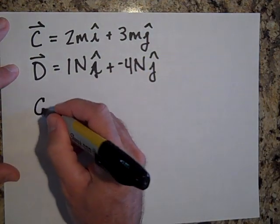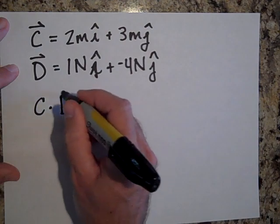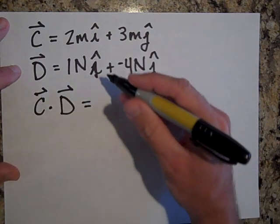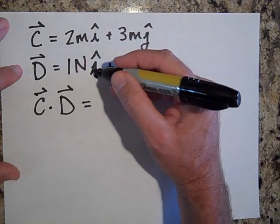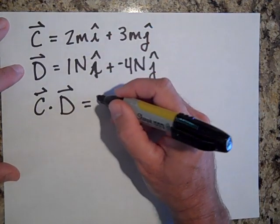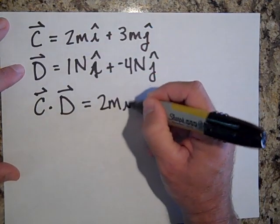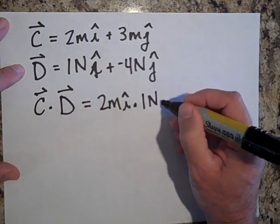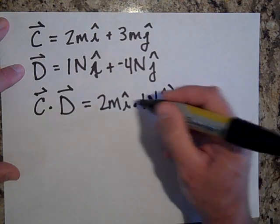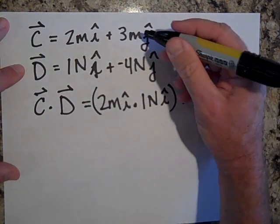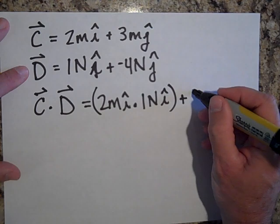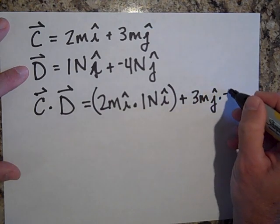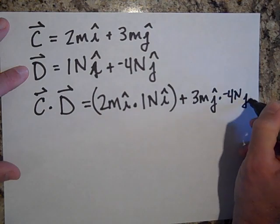And I'll dot those into one another. C dot D, that's going to be equal to, I just multiply these together, 2 meters in the i direction dot 1 newton in the i direction, plus and I'll dot the j's together, 3 meters in the j direction dot negative 4 newtons in the j direction.